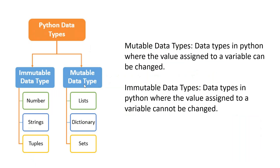Data types are categorized into two parts. One is mutable data types and another is immutable data types. Mutable data types are list, dictionary, and sets — meaning the value assigned to a variable can be changed later. Immutable data types are numbers, strings, and tuples — the value assigned cannot be changed.